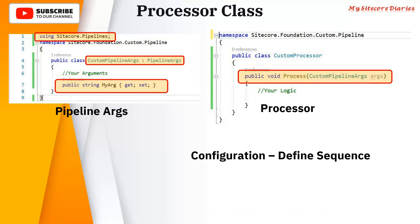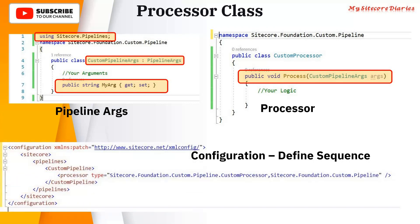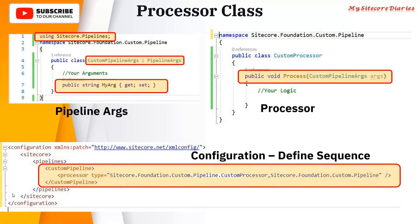Then how is the processor defined? That is the action class. You will define your class and create a method called Process. The Process method gets executed when your pipeline is running. Whatever arguments you have created — like the custom pipeline argument — you will pass to the processor, and inside Process you will write your logic. Then for configuration, you will add a patch file. In the patch file, you add it into the Sitecore pipeline, and then add your custom pipeline as a processor type with the full class name including the namespace, and your DLL. This is how you define any patch file.